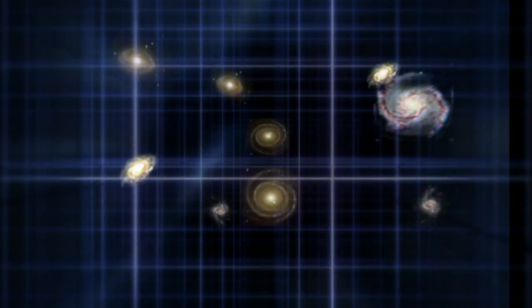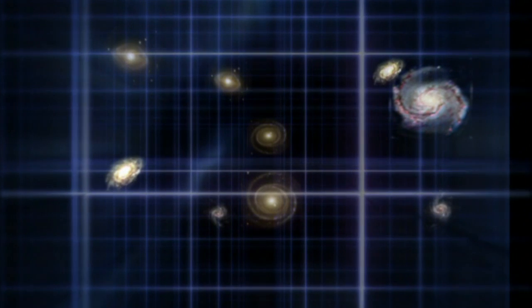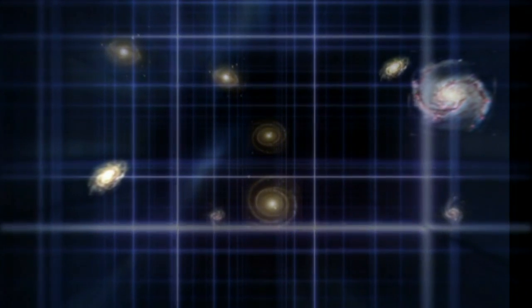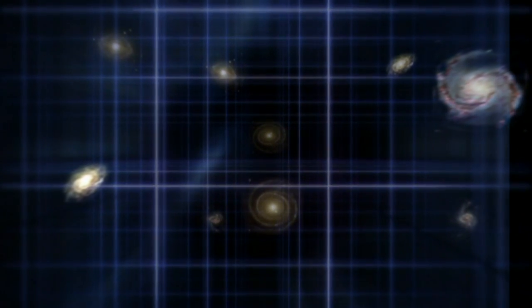In the 1920s, astronomer Edwin Hubble discovered that most galaxies appear to be moving away from us at a rate proportional to their distance. The further away a galaxy is, the faster it appears to be moving away from us. This is due to the expansion of the Universe.